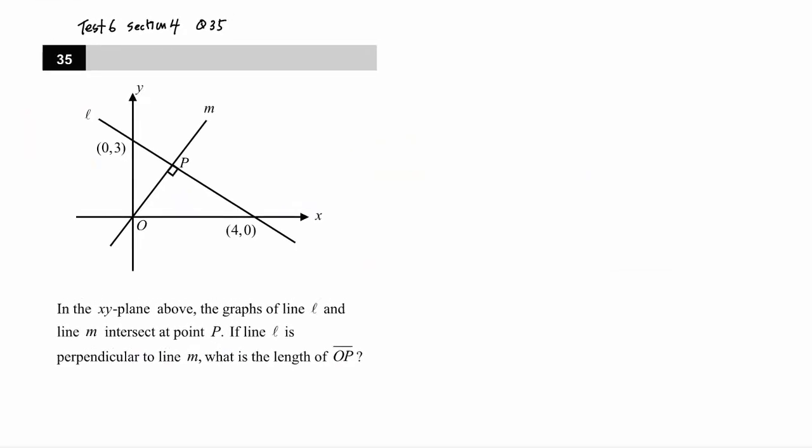Hi, this is SAT math test 6 section 4 question number 35. We have an XY plane with two linear graphs - line L and line M. They intersect at point P and they are perpendicular. We need to find the length of OP.